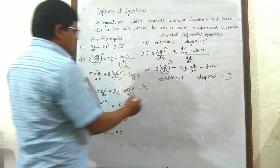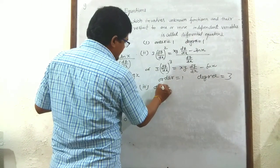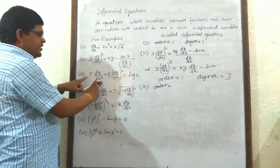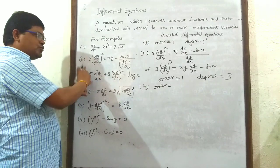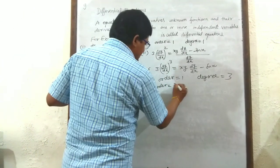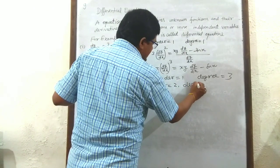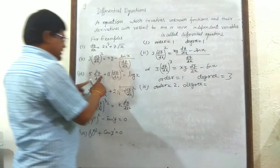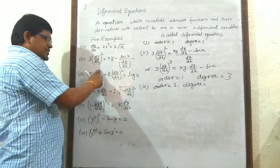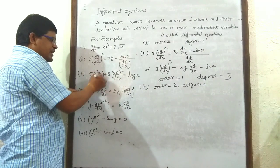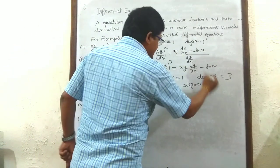Third example: the highest order derivative is d²y/dx², meaning y has been differentiated two times, so order equals 2. The degree: the highest exponent on the highest order derivative is 1, so degree equals 1.